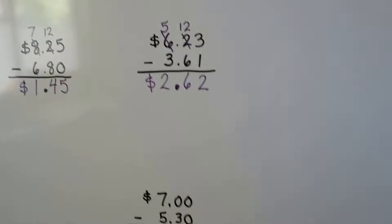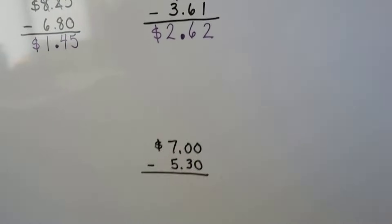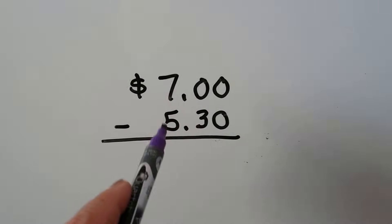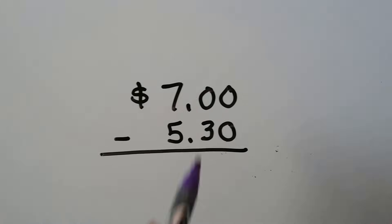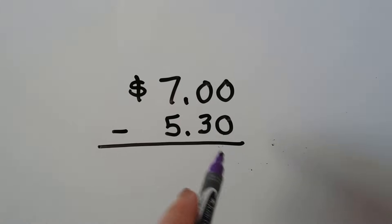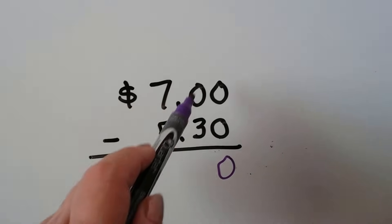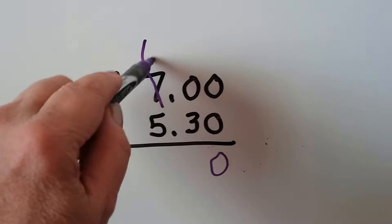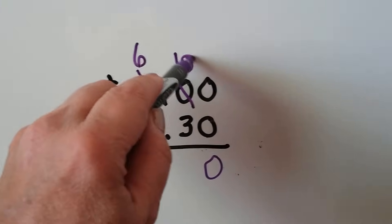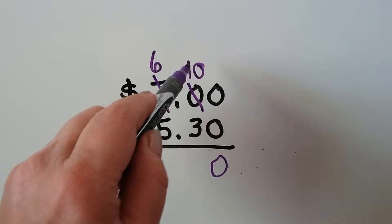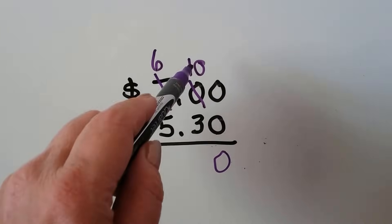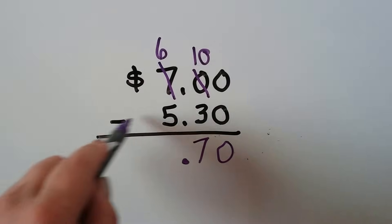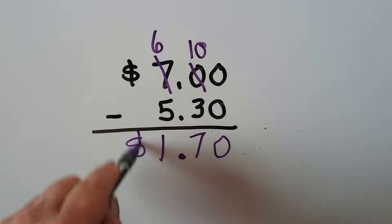Let's try one more with zeros. We have 7 dollars and we're going to spend 5 dollars and 30 cents. 0 take away 0 is easy — that's a 0. And we have 0 take away 3, so we need to regroup this as a 6. This becomes 10 tens because that's the dollar we took away to make 10 dimes. Now we have 10 take away 3, that gives us 7. And we have 6 take away 5, that gives us 1. We remember our dollar sign.